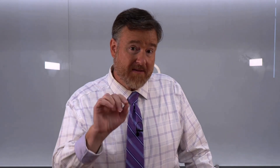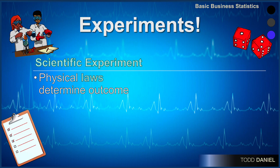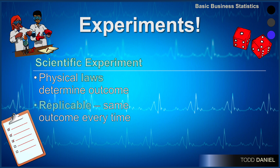Let's use this as our starting point to explain the difference between scientific experiments and statistical experiments. In a scientific experiment, physical laws determine the outcome. Without going into the physical laws about Diet Coke and Mentos, there is some science happening. And because of this, this scientific experiment is replicable — you will get the same outcome every time. Any time you put Diet Coke and Mentos together, you get the same glorious outcome.